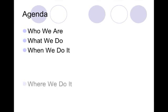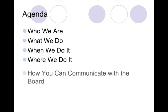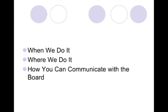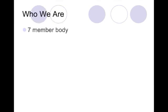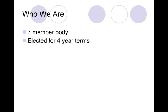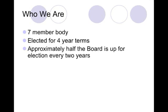Today we're going to talk about who the school board is, what we do, when we do it, where we do it, and how you can communicate with the school board. The school board is a seven-member body made up of individuals from our community who are elected for four-year terms. Approximately half of the board is up for election every two years — three members in one year and four members two years later — which allows us to have some continuity on the school board.